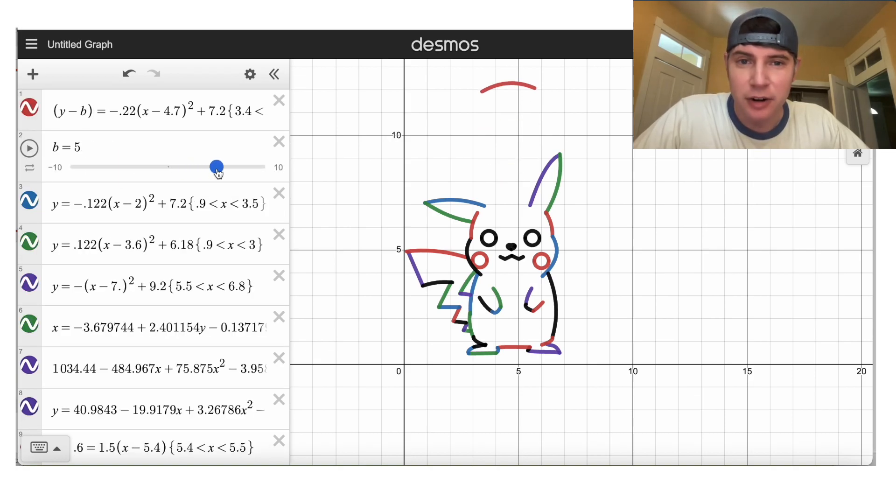And now when you move the slider around, you can see that this first equation that we just did, it moves it up and down. After we do it to all the equations, we're gonna be able to make him jump up and down.